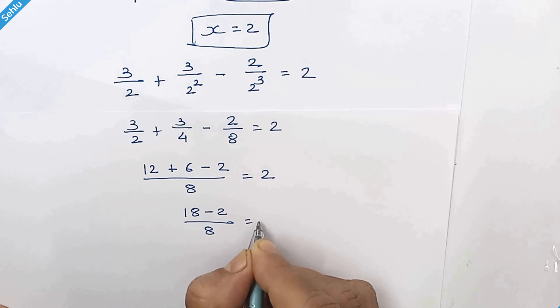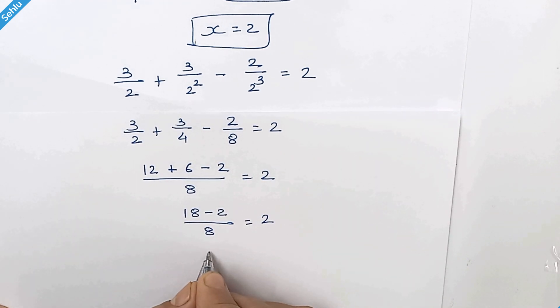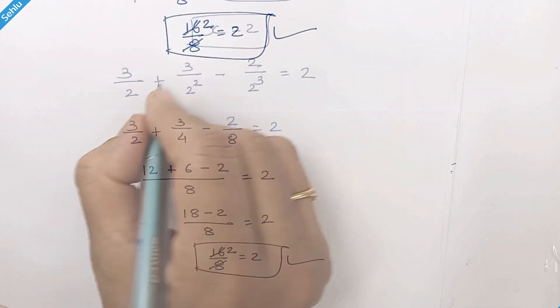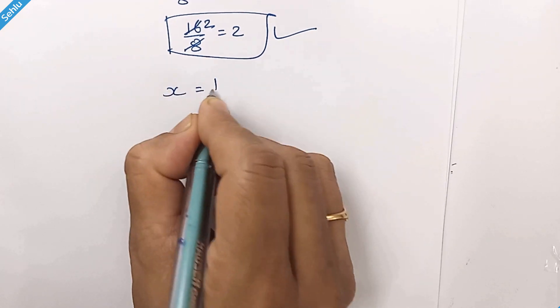So we have 16 over 8 is equal to 2. Now let's take x is equal to 1 over 2.